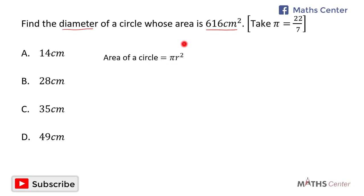The area of the circle is 616 cm squared, so we can say that 616 cm squared equals pi, which is given as 22 divided by 7, times r squared.